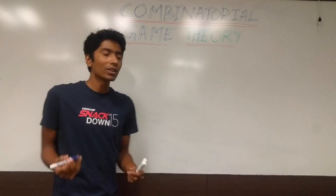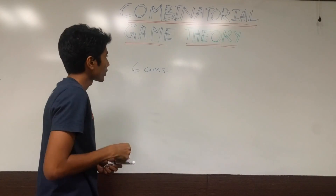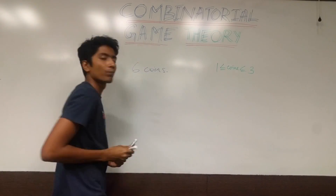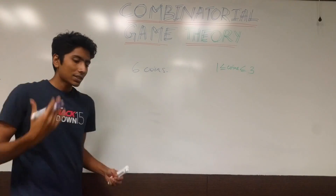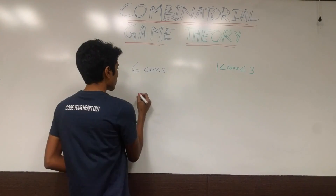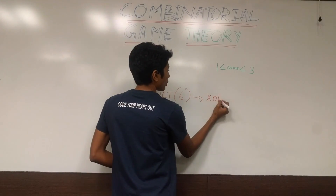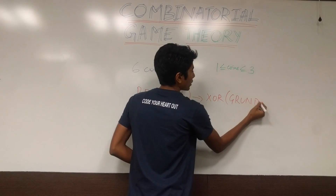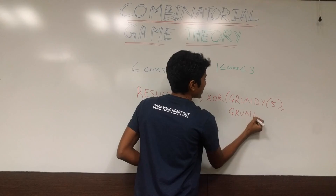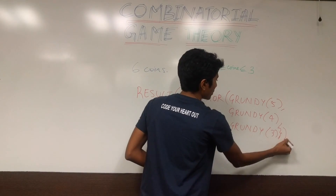Let's pick an example from last time. We have 6 coins, and from this pile you can take between 1 to 3 coins. Last time we learned that Grundy numbers can be calculated using a recursive function. Now with Sprague-Grundy, the result of having 6 coins on your turn is the XOR of Grundy(6−1)=Grundy(5), Grundy(4), and Grundy(3).